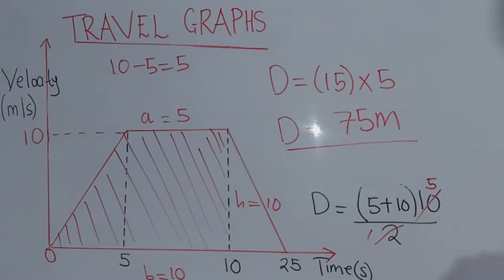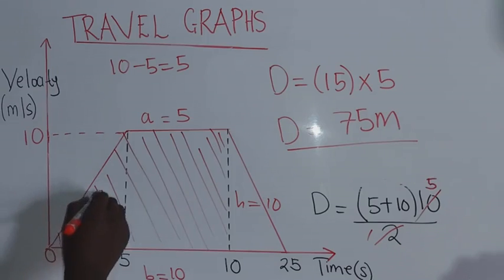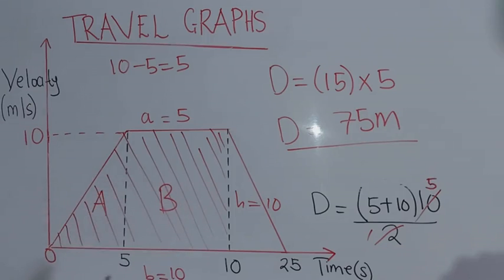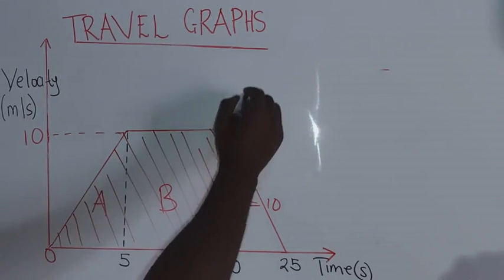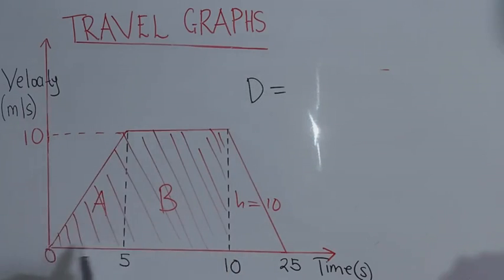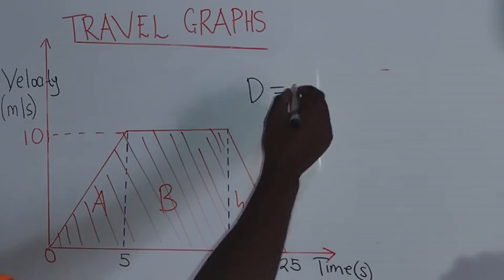There is another method you can use. Look at the shapes: you have a triangle as the first shape and a rectangle as the second shape. If you do not want to use the trapezium formula, you can find the area of the triangle plus the area of the rectangle to get the total distance.